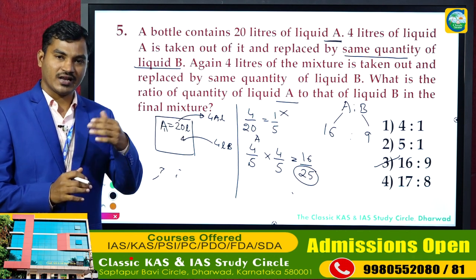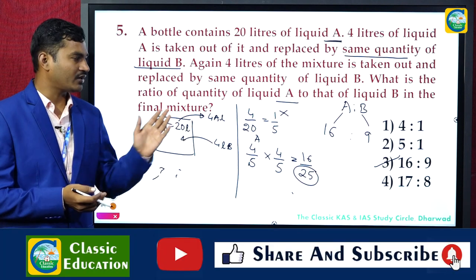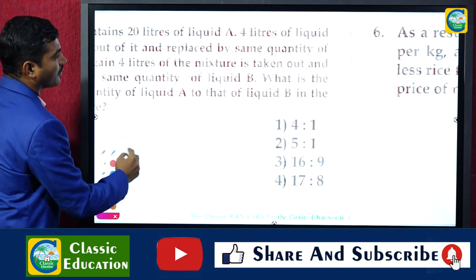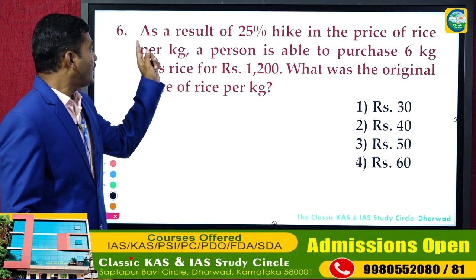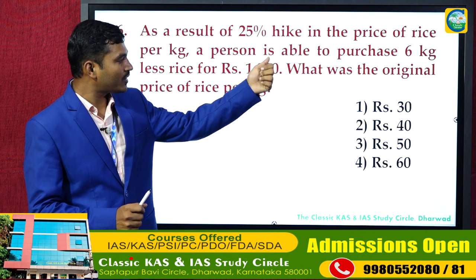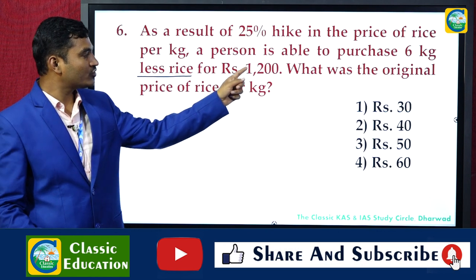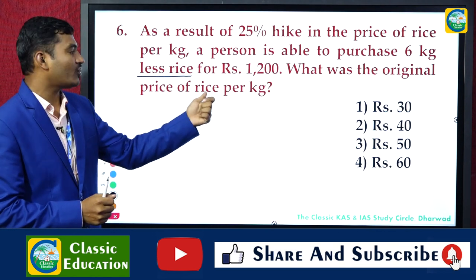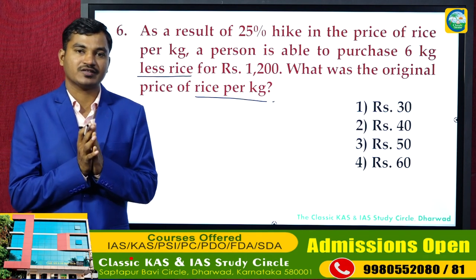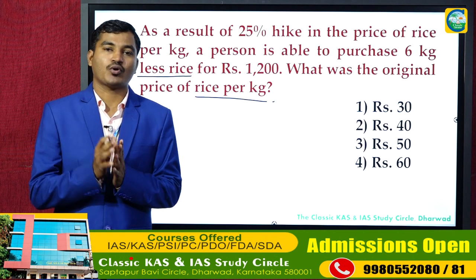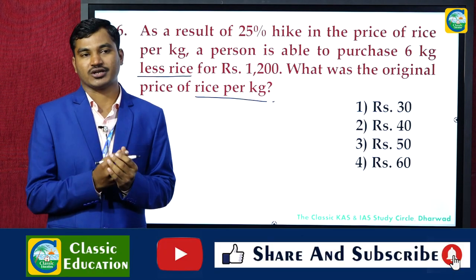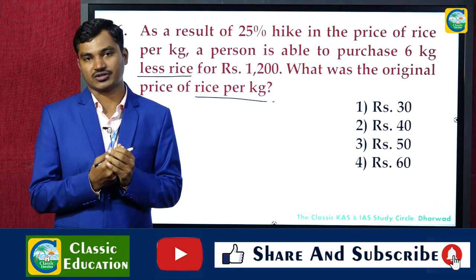As a result of a 25% hike in the price of rice per kg, a person is able to purchase 6 kg less rice for Rs 1200. What was the original price of the rice per kg? This question is based on the concept that the product of two numbers — quantity × rate — is constant.